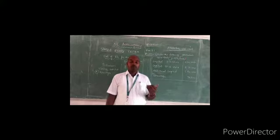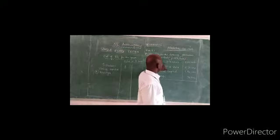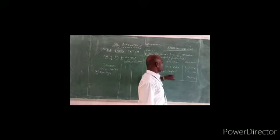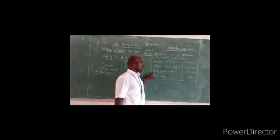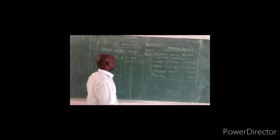The Statement of Affairs method is very simple: closing capital, add drawings, less additional capital, plus opening capital — the answer will be profit or loss. The information given: opening capital on 1st April 2018 is some amount; closing capital on 31st March 2019 is 8,50,000; additional capital is 1,20,000; drawings is 70,000.